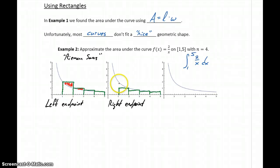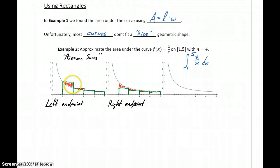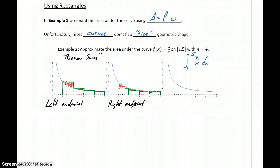This time we have some area that we're failing to include. So with the left endpoint method, we come up with an overestimate because we're calculating more area than we want to. With the right endpoint method, we come up with an underestimate since we're not including all of the area we want to.